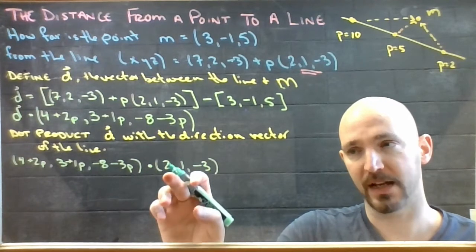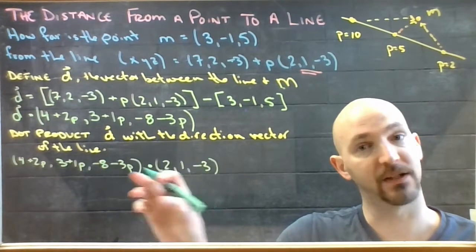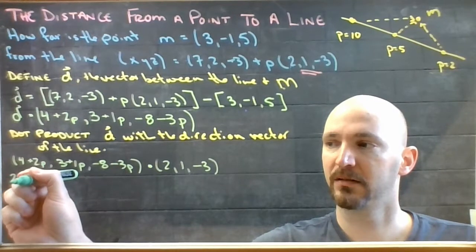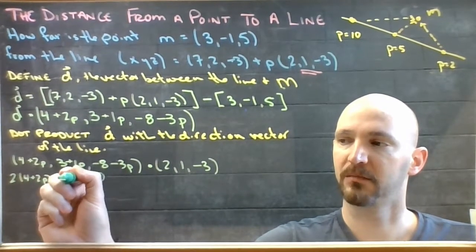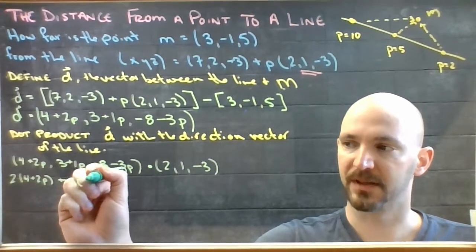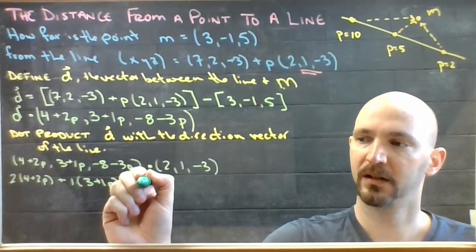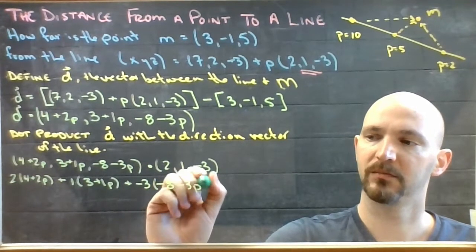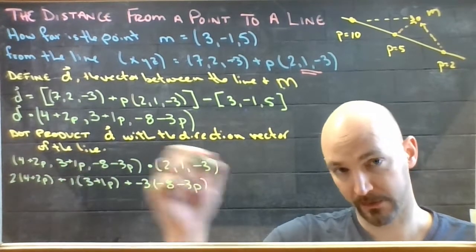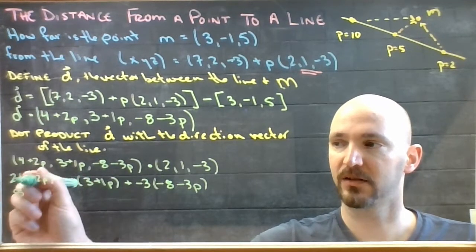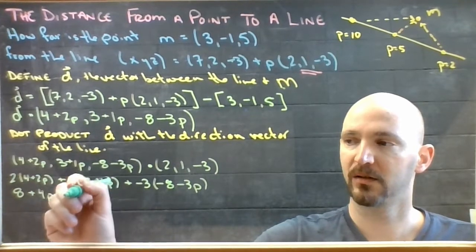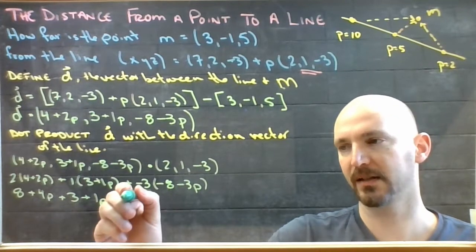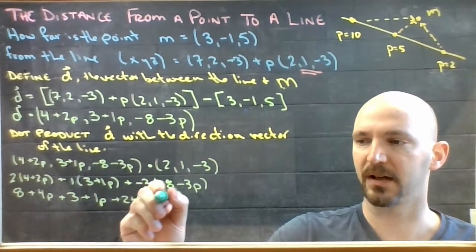Dot product is you take your X's, multiply your X's, Y times your Y, Z times your Z, and you add them all up. So 2 times (4 + 2P) plus 1 times (3 + P) plus -3 times (-8 - 3P). I'm going to expand into the brackets: 2 times 4 is 8, 2 times 2 is 4P, plus 3 plus P, minus 3 times -8 would be positive 24, -3 times -3 is positive 9P.